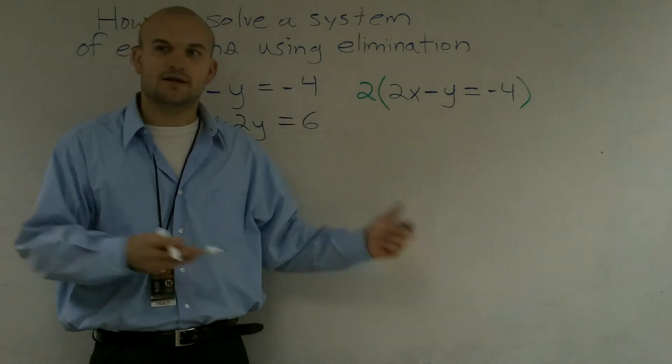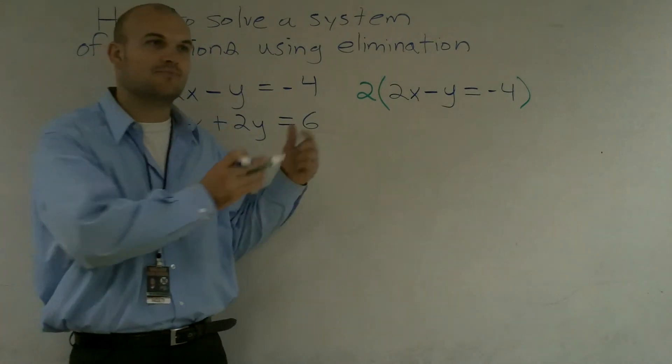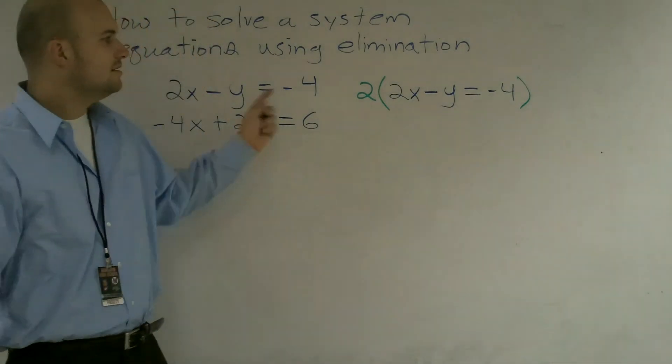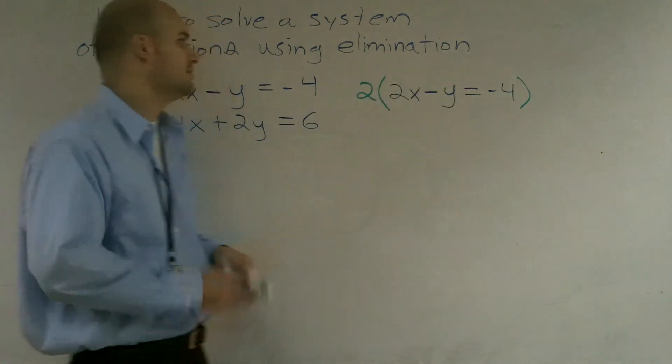Remember, it goes back to that property of equality with multiplication. If you multiply it on one side, you've got to multiply it on the other side. If you're multiplying anything on a number, you've got to multiply the whole equation.